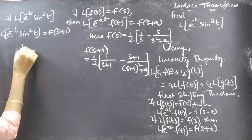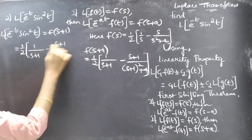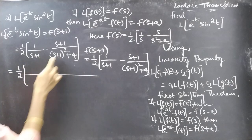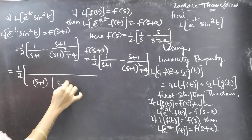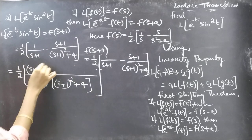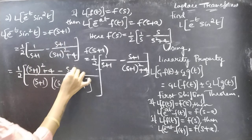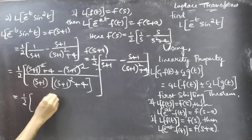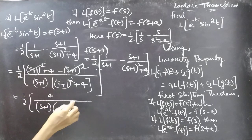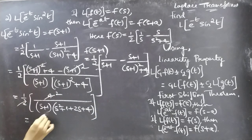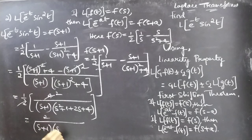F(s plus 1) equals 1 by 2 into 1 by (s plus 1) minus (s plus 1) by (s plus 1) squared plus 4. Taking the common denominator (s plus 1) into (s plus 1) squared plus 4, the numerator gives (s plus 1) squared plus 4 minus (s plus 1) squared. The (s plus 1) squared terms cancel, leaving 4. So this equals 1 by 2 into 4 by (s plus 1) into (s squared plus 2s plus 5).